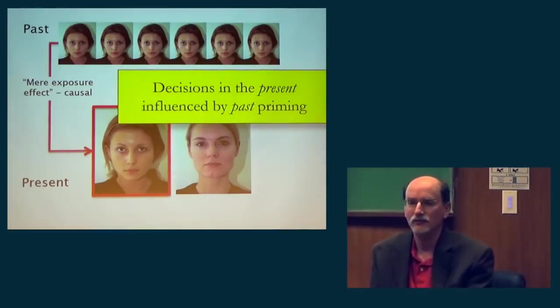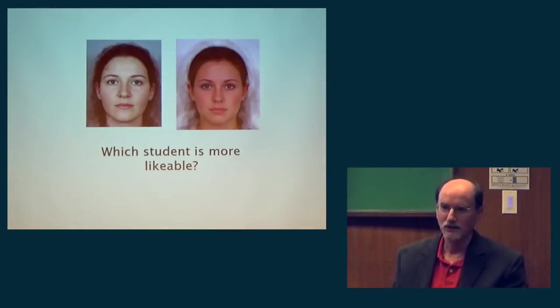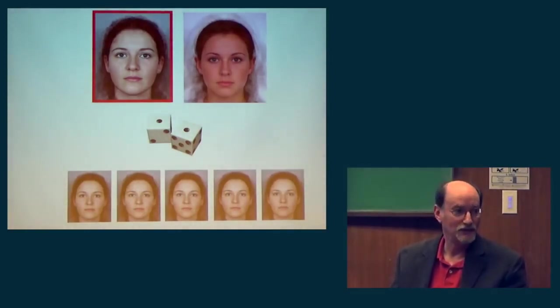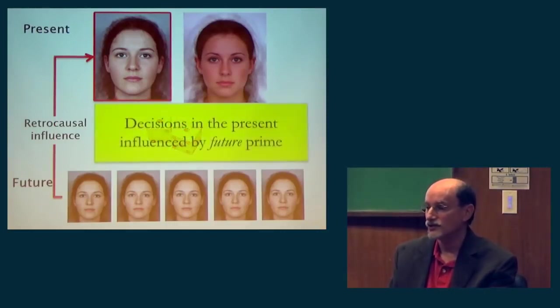The new element here is the same experiment reversed in time. So to reverse it in time, I present you again with this task: which student is more likable? And they're equally likable. So you make a decision. Now you make a random decision. We're going to toss a die. And we're going to prime you with the randomly selected prime afterwards. It might be subliminal or liminal prime. But nevertheless, it's after you've already made your decision. If there's precognition going on, then your future prime will influence your decision in the present. So this is a complete reversal of the usual mere exposure effect. It's a backwards in time effect, a retrocausal influence. In this case, decisions in the present influenced by a future prime.